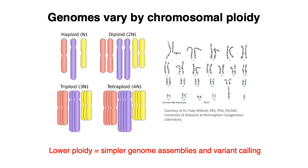Genomes can also vary in terms of their ploidy. Humans are diploid, whereas some plants can have much higher ploidy numbers. This is relevant for genomics because genomes with lower ploidy make it easier to call sequence variants and easier to perform genome assembly — both of which we'll talk about in the next lecture. Organisms with higher ploidy are more difficult to sequence and assemble.